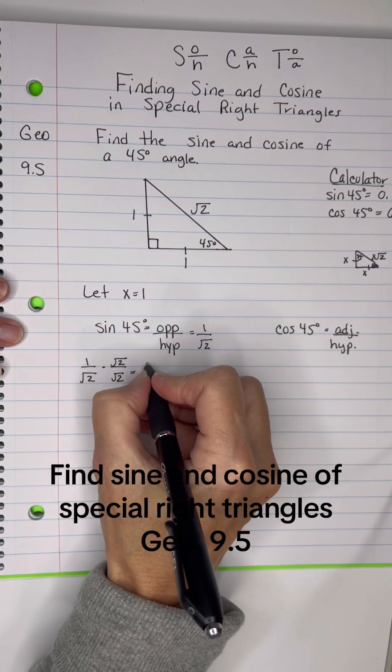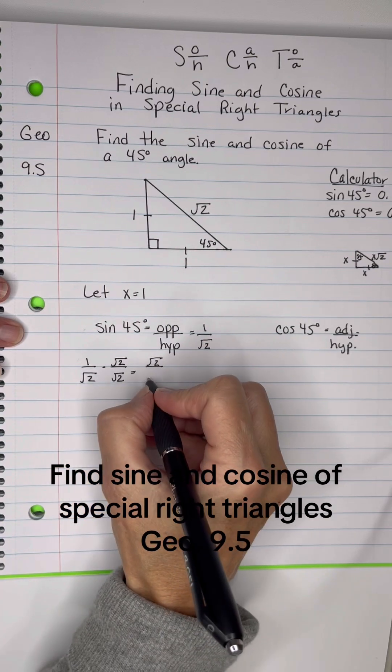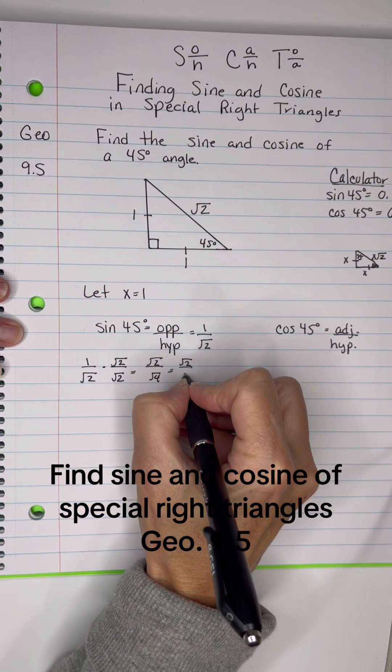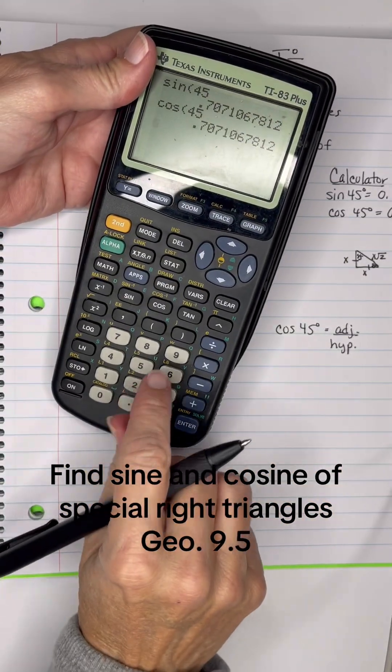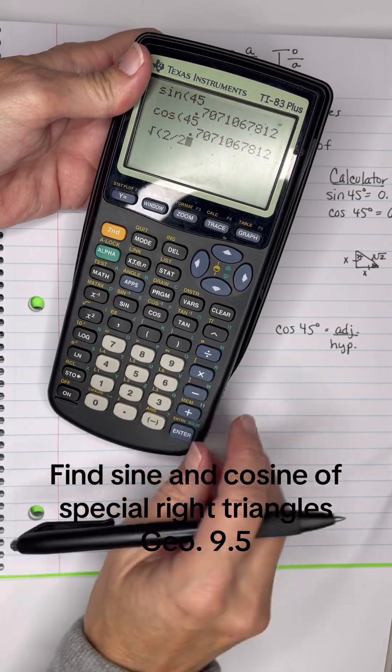And we have 1 root 2 on top over the square root of 2 with the square root of 2, which is the square root of 4, and it becomes root 2 over 2. So I'm going to use a calculator to simplify it first. Root 2 divided by 2.